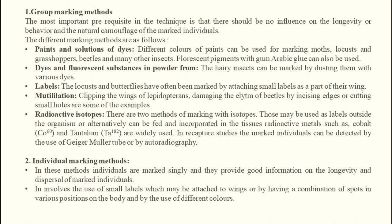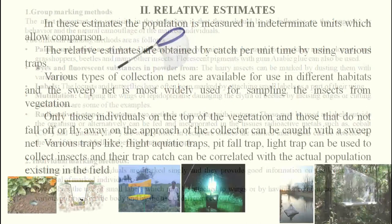In individual marking method, individuals are marked singly and provide good information on longevity and dispersal of the marked individual. Group marking is used for studying migration and immigration, while individual marking uses small labels attached to wings or a combination of spots in various positions on the body with different colors. In individual marking, one insect is marked, released, and then recaptured for study.